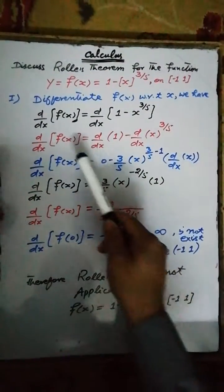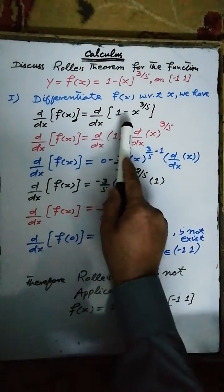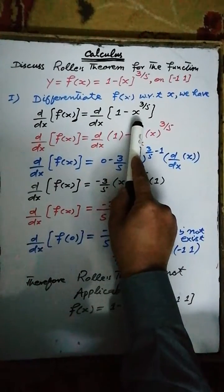Differentiate the given function with respect to x: d/dx of f(x) = d/dx of (1 - x^(3/5)).